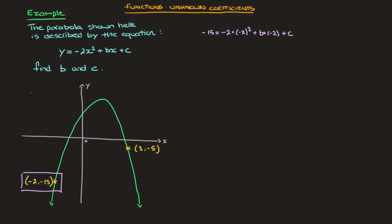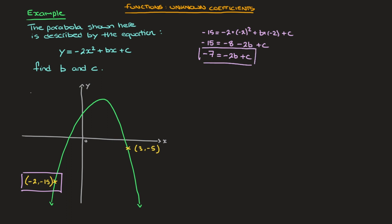I now simplify this as much as I can. Negative 2 times negative 2 squared is negative 2 times 4, which is negative 8. Plus b times negative 2 turns into minus 2b plus c. Now adding 8 to both sides gives negative 15 plus 8, which is negative 7, equals negative 2b plus c. We now have an equation involving the two unknowns b and c. I'll call this equation 1, or e1.